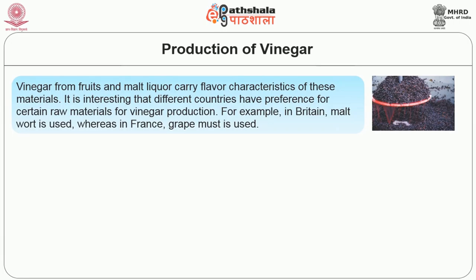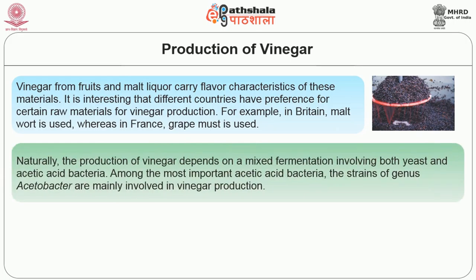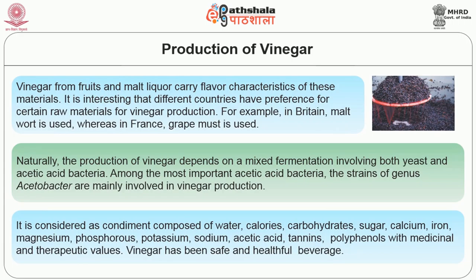Vinegar from fruits and malt liquor carry flavor characteristics of these materials. It is interesting that different countries use different materials for vinegar production; for example, in Britain malt wort is used, whereas in France grape must is used. The production of vinegar depends on a mixed fermentation involving both yeast and acetic acid bacteria. Among the most important acetic acid bacteria, strains of the genus Acetobacter are mainly involved in vinegar production. Vinegar is considered a condiment composed of water, carbohydrates, sugar, calcium, iron, magnesium, phosphorus, potassium, sodium, acetic acid, tannins and polyphenols with medicinal and therapeutic values.